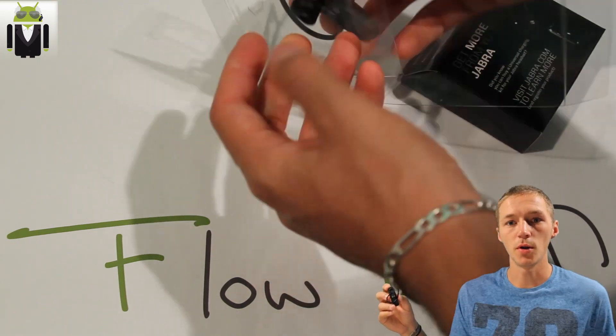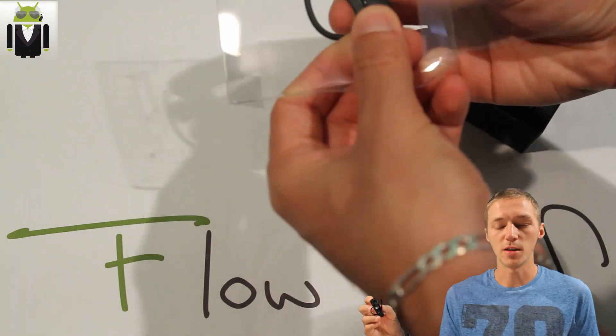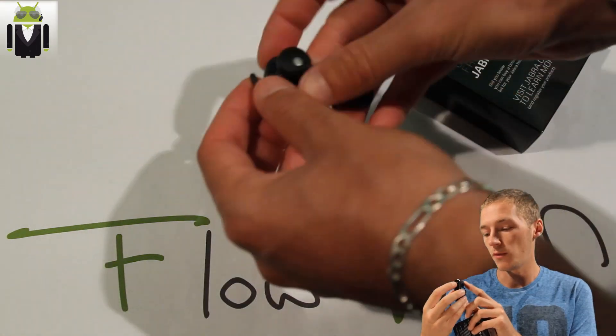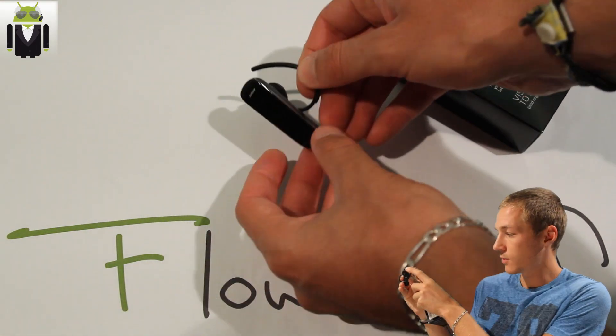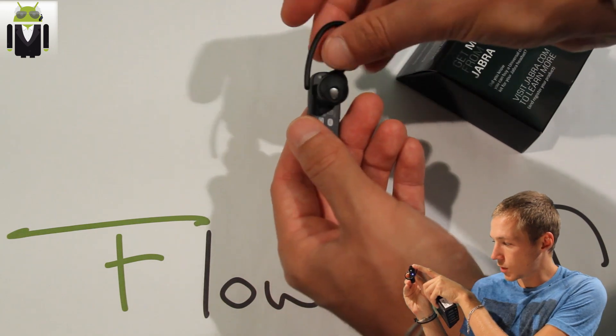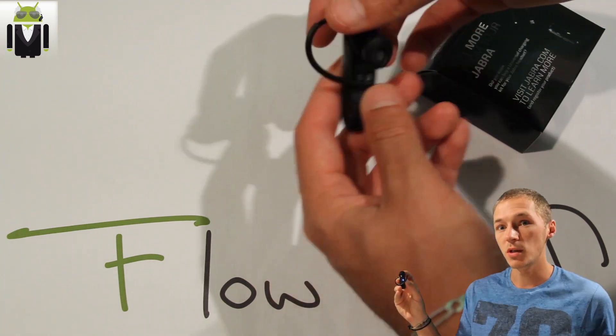First time, the Bluetooth turns on and you can pair the device easily. Second time, you have to press this button just on the top there. You press it for five seconds and you see the blue for Bluetooth just turn on, and you are waiting for pairing.